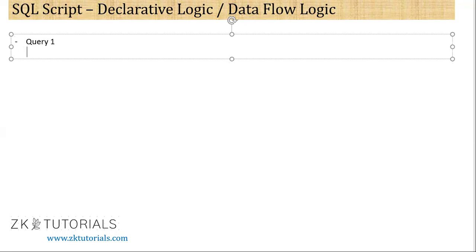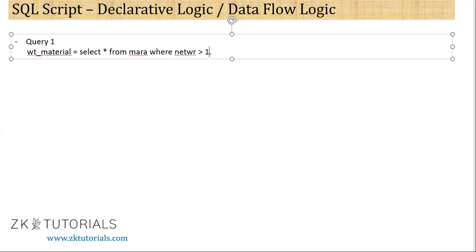So, my SQL query — let's say, WT material. What do we use? Select star from MARA. Or, if we want to give any condition: WHERE network could be greater than 1000.